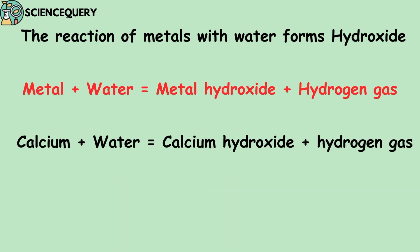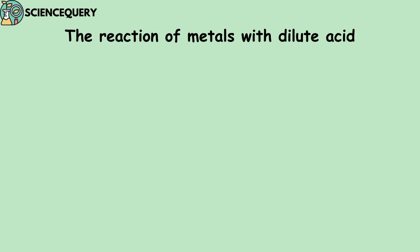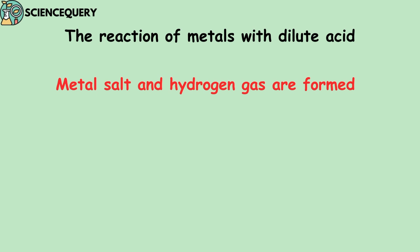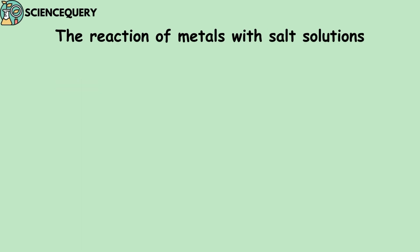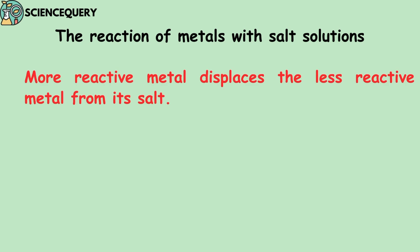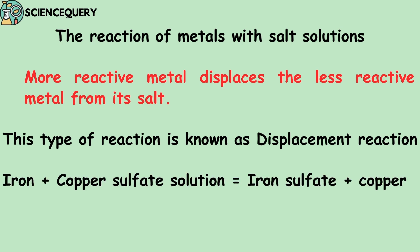Another example is calcium — when it reacts with water it forms calcium hydroxide plus hydrogen gas. The next chemical property is the reaction of metal with dilute acid. Metal salts and hydrogen gas are formed when a metal reacts with dilute acid. For example, when zinc reacts with dilute hydrochloric acid, it forms zinc chloride plus hydrogen gas. Now let us see the reaction of metals with salt solution. More reactive metals displace less reactive metals from their salt — this type of reaction is known as a displacement reaction. For example, iron when it reacts with copper sulfate solution displaces the copper and forms iron sulfate, releasing copper.